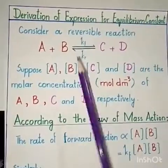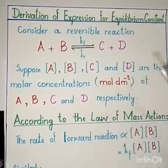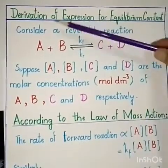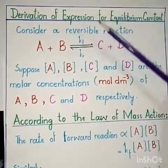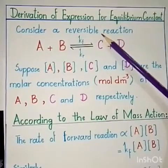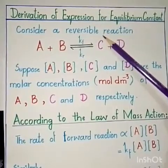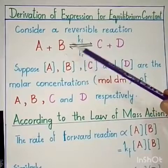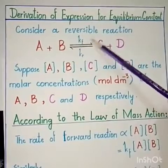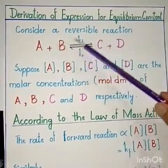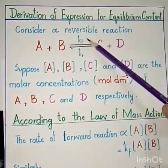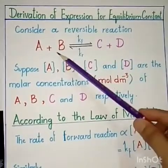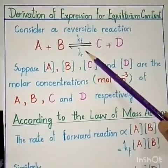Here is the derivation of the expression for the equilibrium constant. We consider a reversible reaction: A + B combine to form C + D. When they combine, that is called the forward reaction. When C + D again form A + B, that is called the reverse reaction.